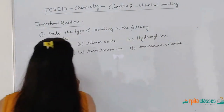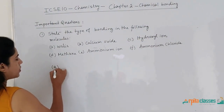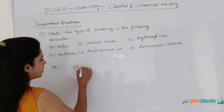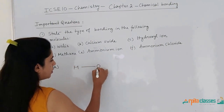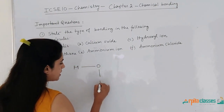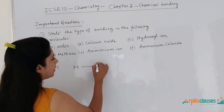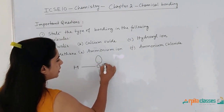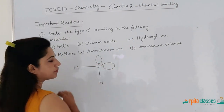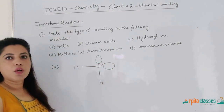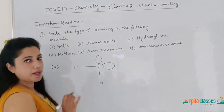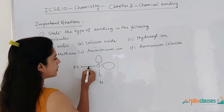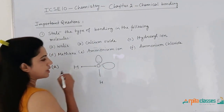The first molecule is water. Let us see the structure of water. There are two lone pairs on the oxygen atom. So this is covalent bonding — we can see there is a covalent bonding between hydrogen and oxygen.